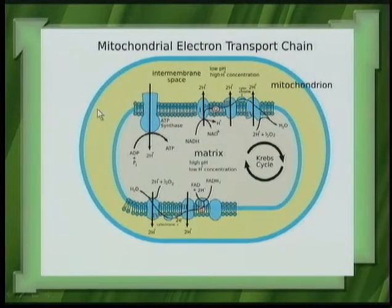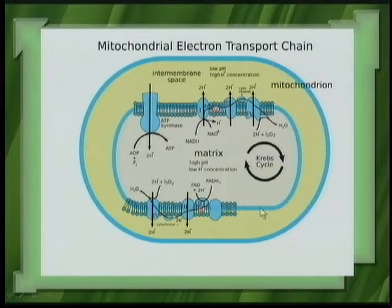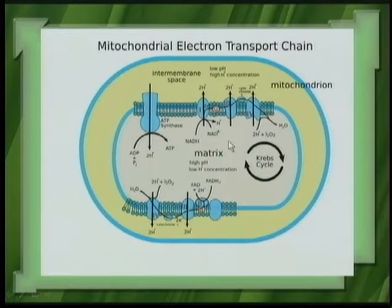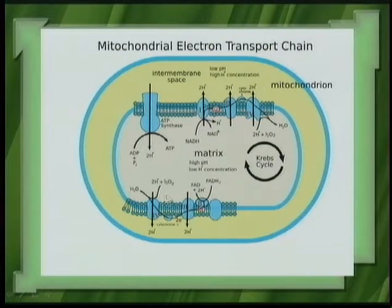The mitochondria: the outer membrane, the inner membrane, and the electron transport chain happens in the inner membrane. Glycolysis happens in the cytoplasm; the Krebs cycle happens within the mitochondrial matrix; the electron transport chain happens in the inner mitochondrial membrane, which has infoldings to increase surface area so more electron transport systems can operate.